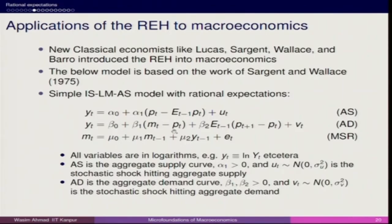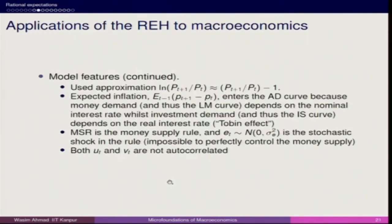The aggregate demand curve has beta 1 and beta 2 both greater than 0, with a normally distributed error term — a stochastic shock hitting aggregate demand — along with the expectation of inflation. The money supply rule also has error term Et distributed as N(0, sigma squared A). We assume ut and Vt are not autocorrelated: E(Vt · Vt-1) = 0 and E(ut · ut-1) = 0. Multicollinearity is different — when error terms are correlated with explanatory variables, it impacts variance, which we deal with as the heteroscedastic case.